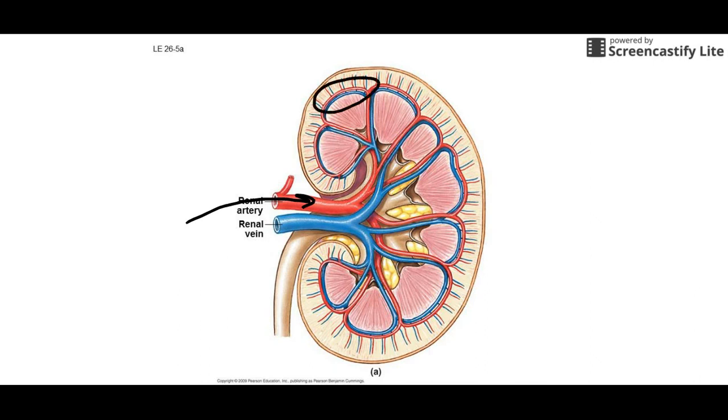Out here is where you'd find all the nephrons, out in this section. The portions of a kidney are usually divided up this way: this outer chunk right here is called the cortex, renal cortex. Reno is the prefix that means kidney.